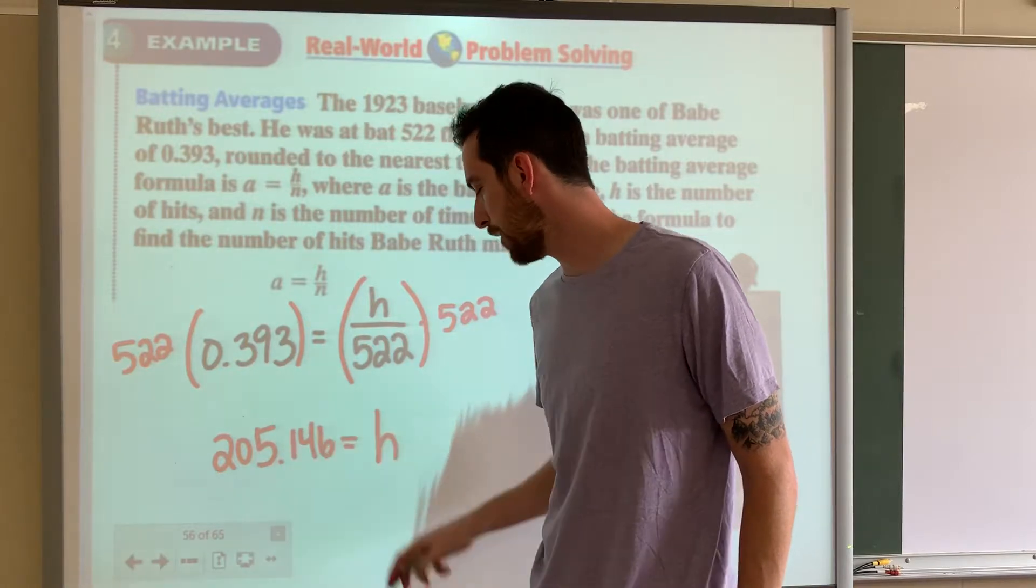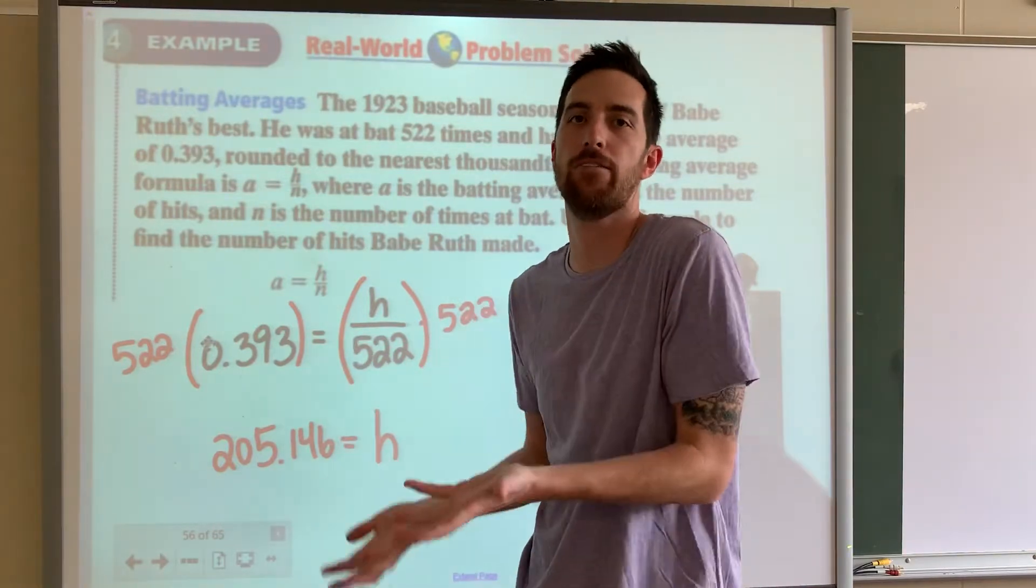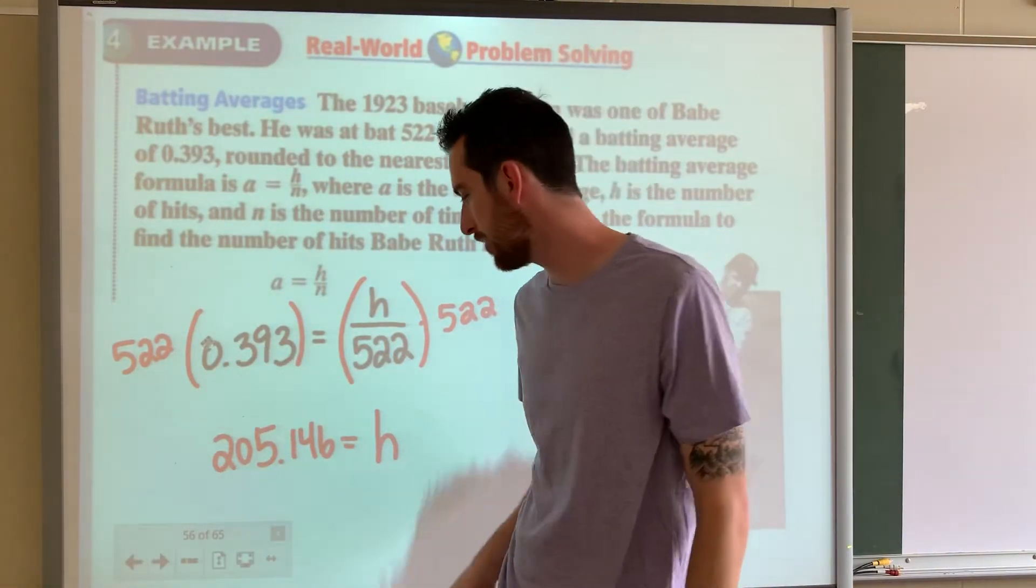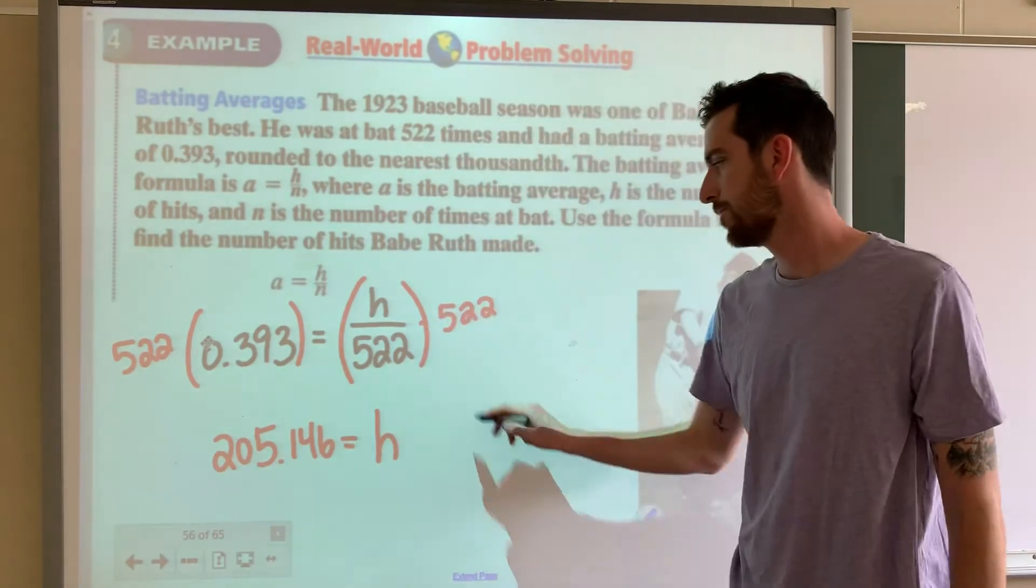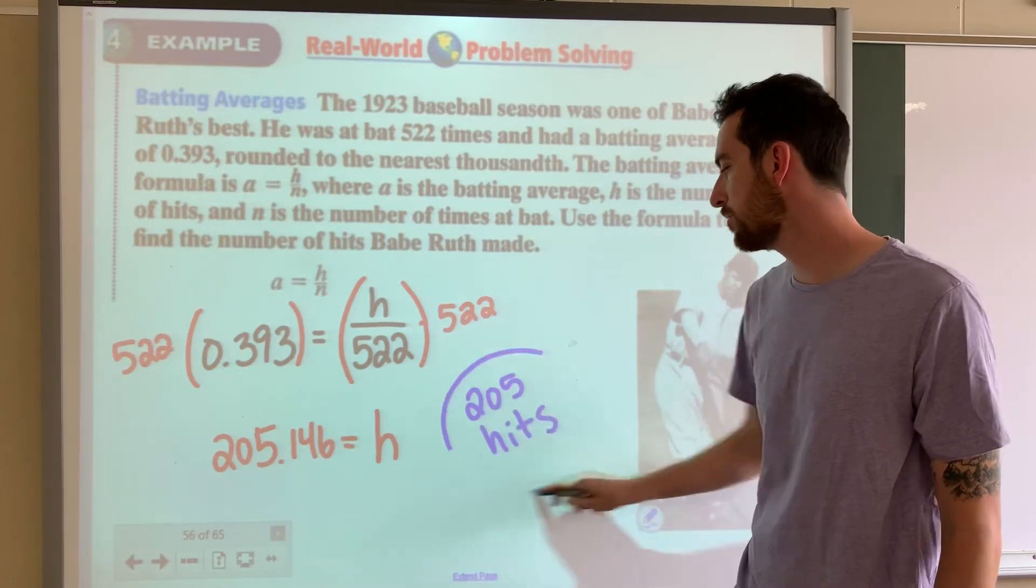Now, do you think Babe Ruth had 205.146 hits? No, this is a rounded average right here. So we're going to go with 205 hits. Way to go, Babe Ruth.